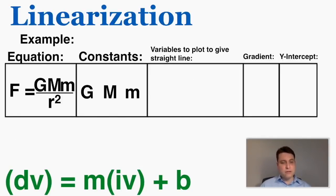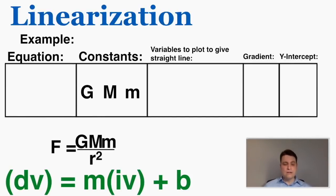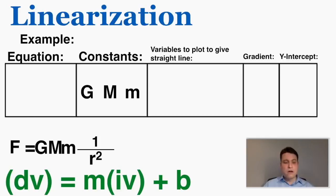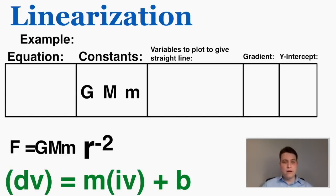Here's a more complicated equation we'll actually be working with later this year. You don't have to understand what any of these equations mean in order to linearize them — you just have to know what the constants and variables are. Here the constants are capital G, capital M, and lowercase m. I'm going to bring this equation down and try to manipulate it because it's not entirely clear how I can get variables multiplied by constants. I do see that f is taking the place of dv, so f is probably going to be my dv, but I now need to separate the constants from the variables.